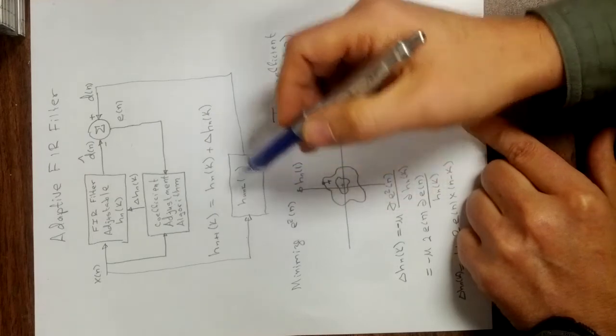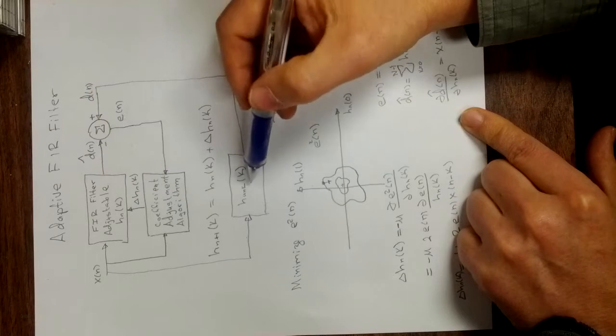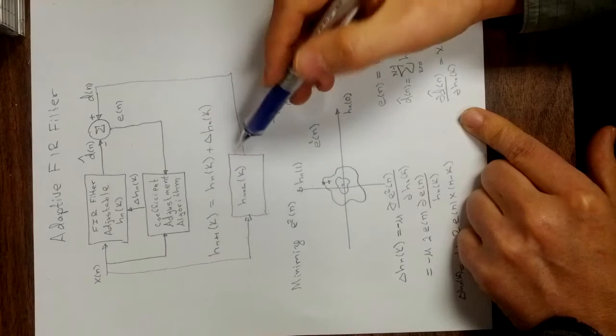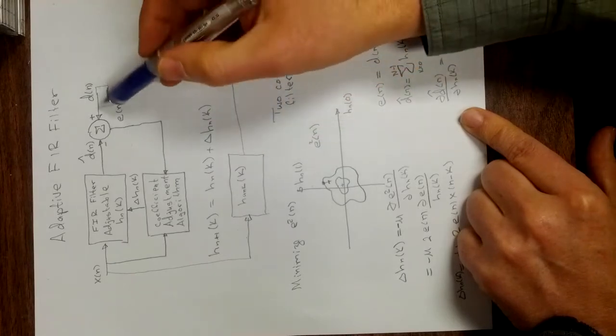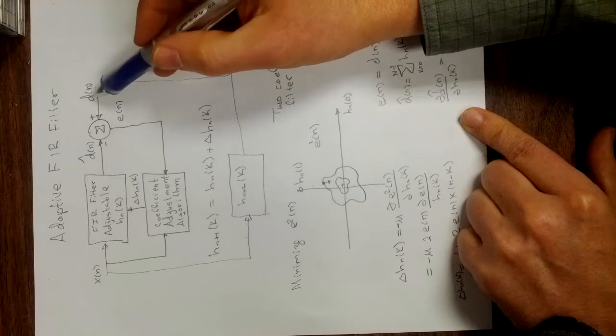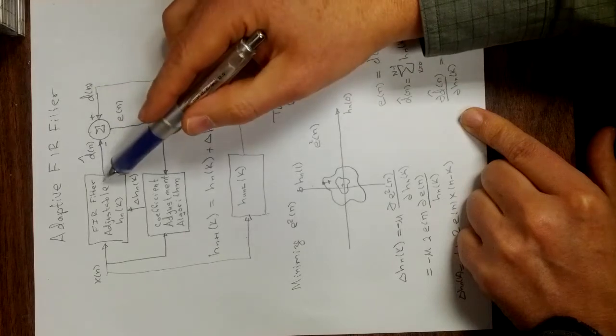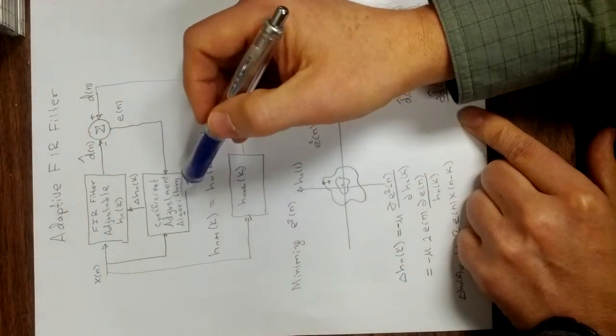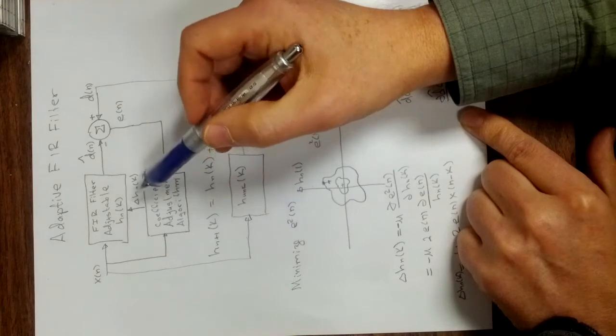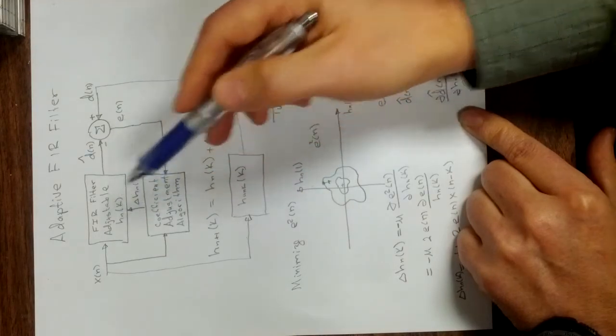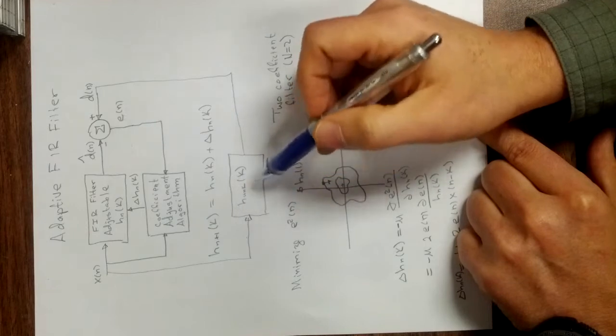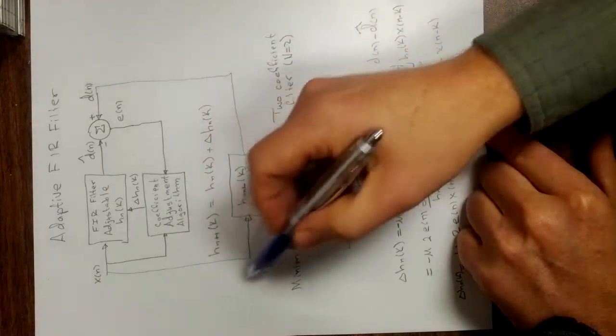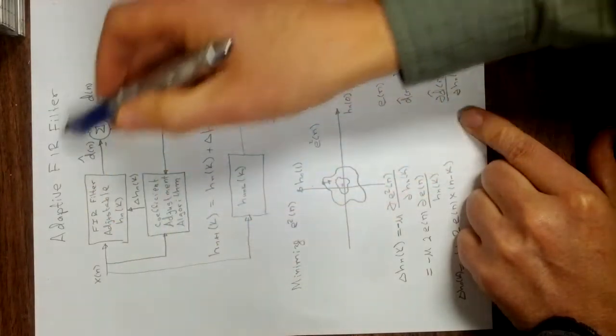But in this case what we want to do is make our FIR filter mimic that filter. So we take the same input x of n and put it into our unknown filter, and the output of our unknown filter we would feed into the d of n. That would be our desired output from our adjustable filter. And if we can make this coefficient algorithm work properly, then the h sub n of K will converge to the h sub unknown of K. This bottom part right here is just an application, this is an adaptive filter up here.